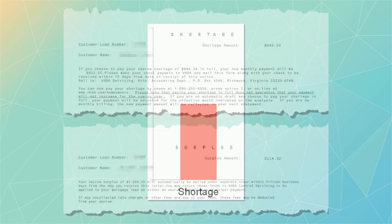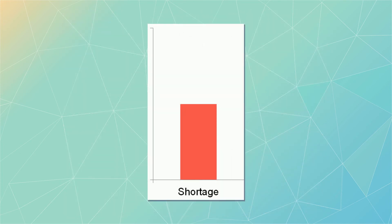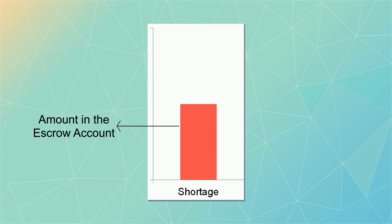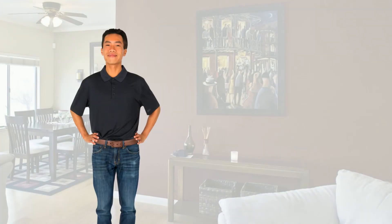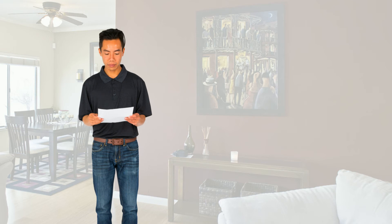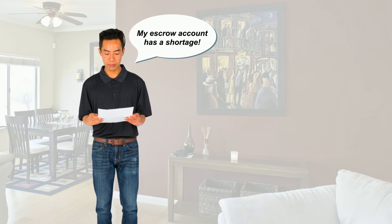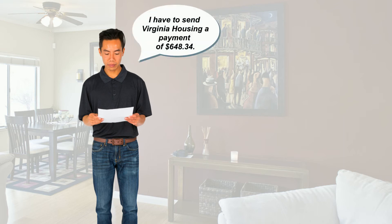A shortage means the amount of money in the escrow account is not enough to pay the anticipated expenses. For example, Mike owns a townhome in Franconia. When he receives his escrow disclosure this year, it indicates his escrow account has a shortage of $648.34. He must provide these funds to Virginia Housing so his escrow account reaches the balance required to pay his future expenses.